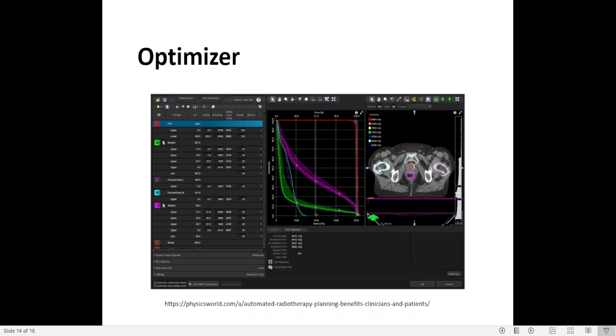Here is a screenshot of an optimizer from a specific vendor. On the left side, it's where we input the constraints for targets, for organs at risk. In this case, here in this optimizer, we have the DVH, but we also have the CT imaging with the dose distribution in real time as the optimizer is doing the work there.